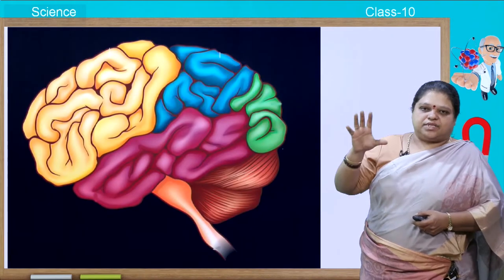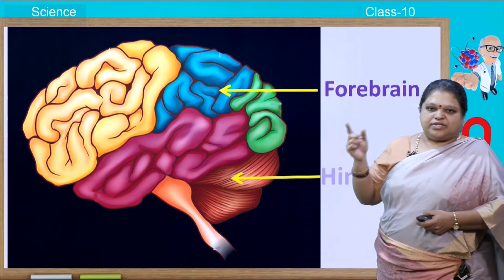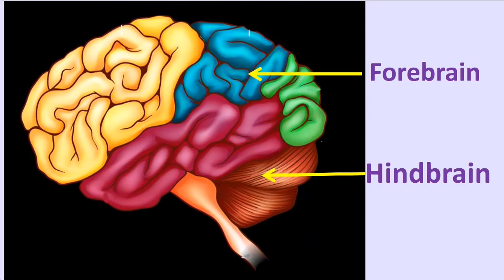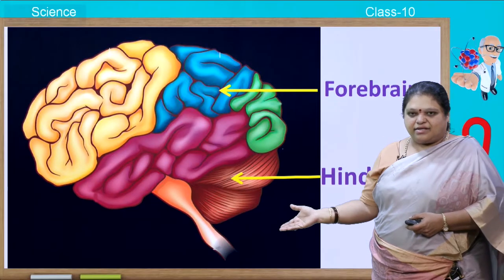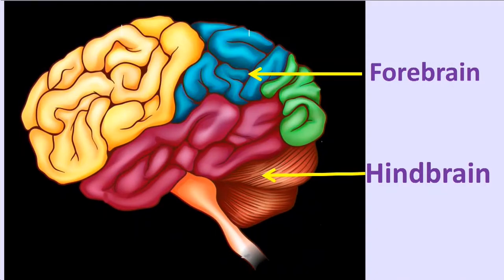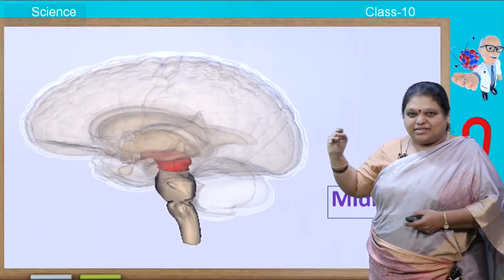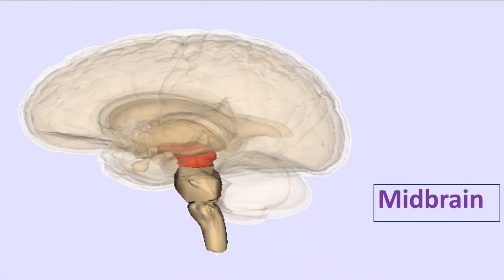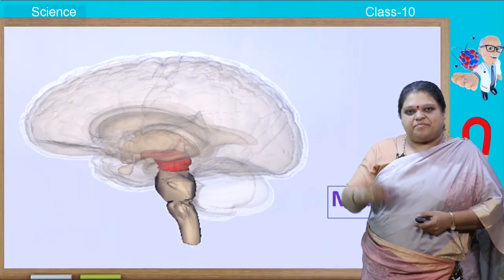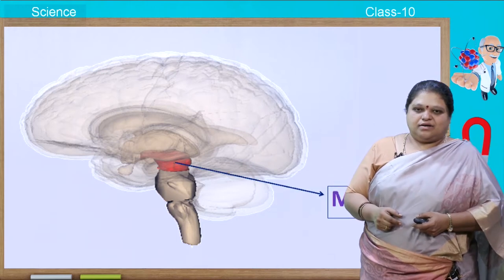Let us see the different parts of the brain. There are three parts: the first one is the forebrain — the uppermost part — then the hindbrain, and in the middle you find the midbrain, which you cannot see in the diagram as it is inside. So the three major parts are forebrain, midbrain, and hindbrain.